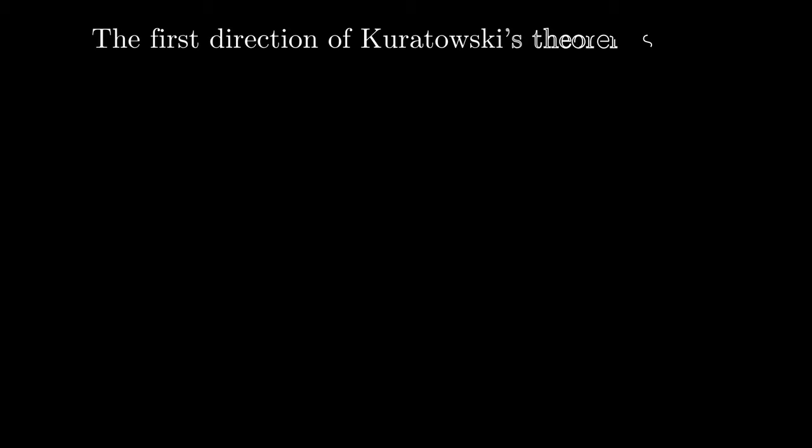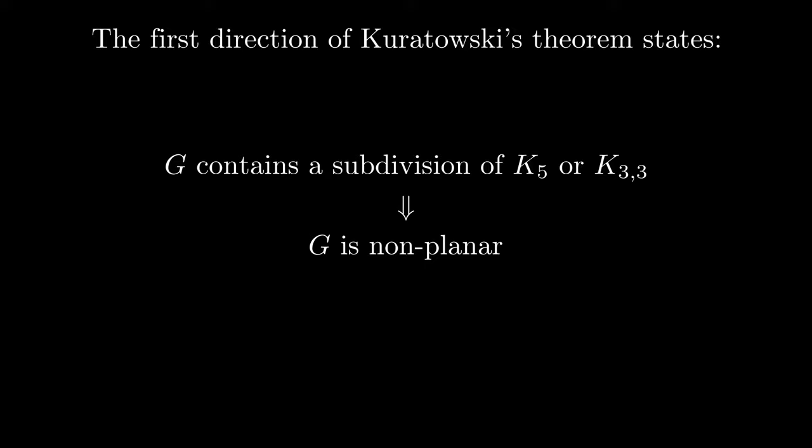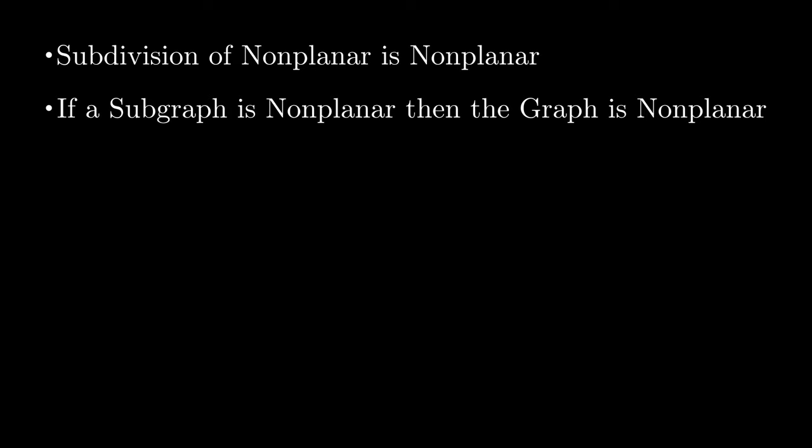Now that we're finished with the preliminaries, we can move on to proving the first direction of Kuratowski's theorem. This direction is that G is nonplanar if G contains a subdivision of K5 or K3,3. We've established so far that a subdivision of a nonplanar graph is nonplanar, and that if a subgraph of a graph is nonplanar, then that graph is nonplanar. So if we assume that K5 and K3,3 are nonplanar, then we have the first direction of Kuratowski's theorem.